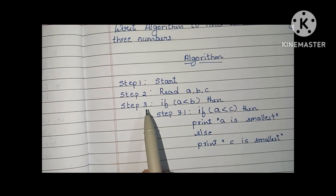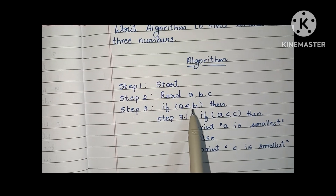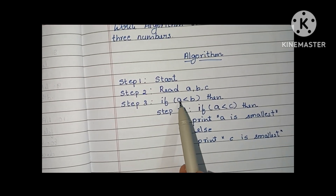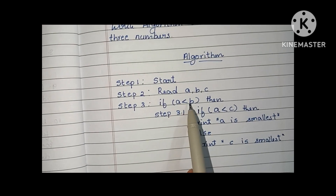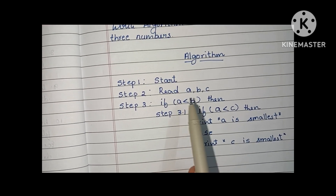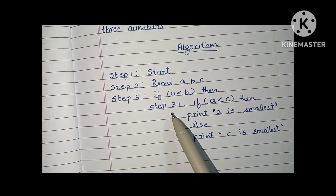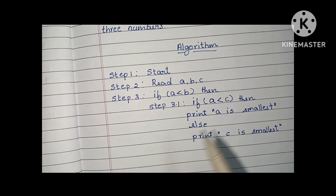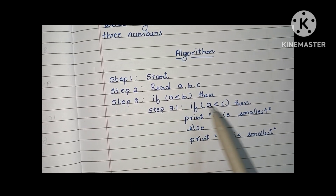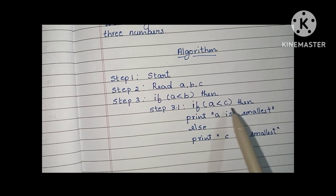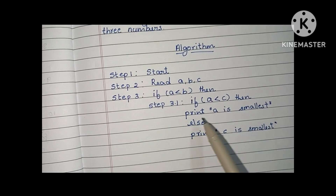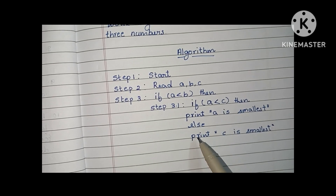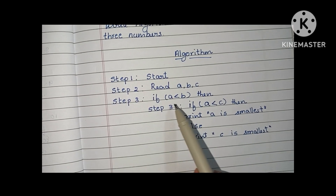So in step 3, first we compare a and b. If a less than b is true, it means a is lesser than b. We then execute step 3.1: if a is less than c, it means a is smaller than both b and c, so we print 'a is smallest.' Otherwise, c is smallest.